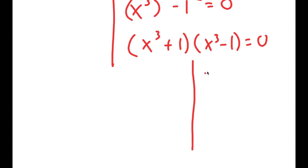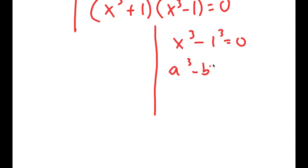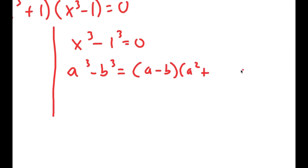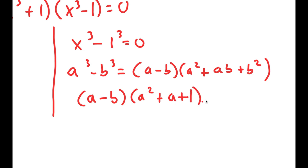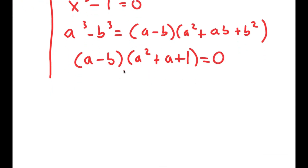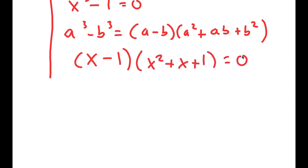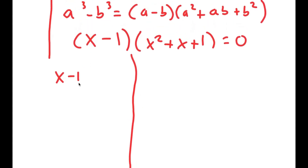Now for x cubed minus 1 equals 0, I'm going to use the property a cubed minus b cubed equals a minus b times a squared plus ab plus b squared. So this turns into x minus 1 times x squared plus x plus 1 is equal to 0, which gives me yet another two equations: x minus 1 equals 0, and x squared plus x plus 1 equals 0.